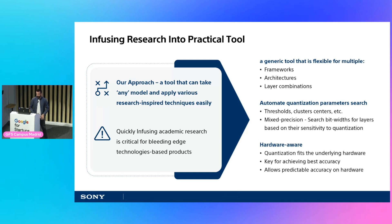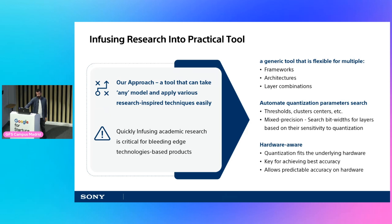MCT automates any parameter search, including thresholds, cluster centers, and specifically mixed precision — which means you don't have to manually select the number of bits per layer. The tool does this automatically and finds the best combination for your model within the hardware restrictions. Since it's hardware-aware, the accuracy you get on the framework at the end of this process is the accuracy you will get on the hardware.